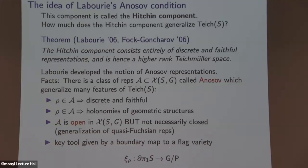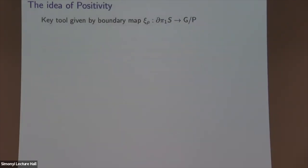If the Anosov condition is not closed, how should it relate to higher-rank Teichmüller spaces? Hitchin representations fall under the Anosov category but satisfy additional properties which make them closed. There has been a lot of recent work trying to put those extra properties into a general framework to identify what all the higher Teichmüller spaces are. This notion is called positivity.